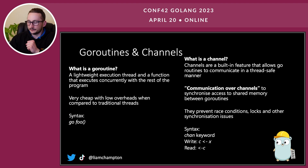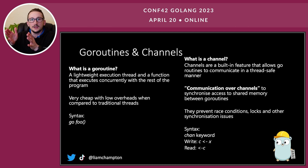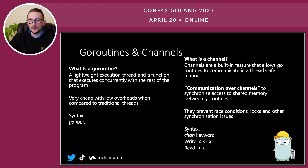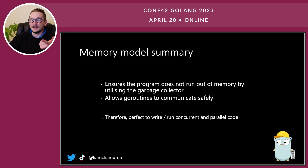With the channel syntax, you use the 'chan' keyword. Go has about 25 keywords — it's a really awesome language. When you want to write to a channel, let's say C is the channel and you want to put the value of X onto it, you use the arrow notation. Likewise, when you want to read from the channel, you take that arrow and put it the other side. In essence, the memory model ensures the program doesn't run out of memory by using the garbage collector, and allows Go routines to communicate safely, making it perfect to run parallel code.